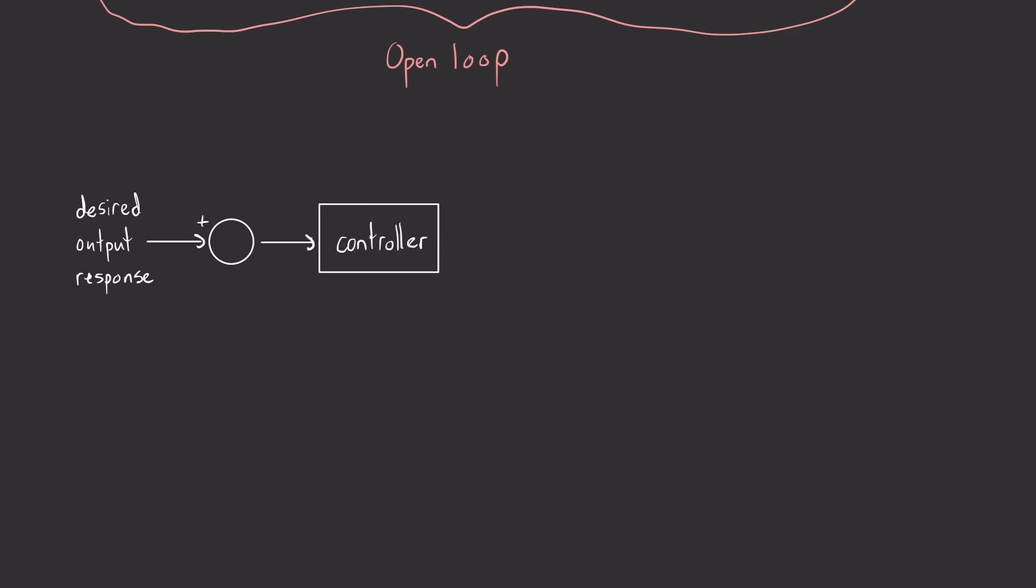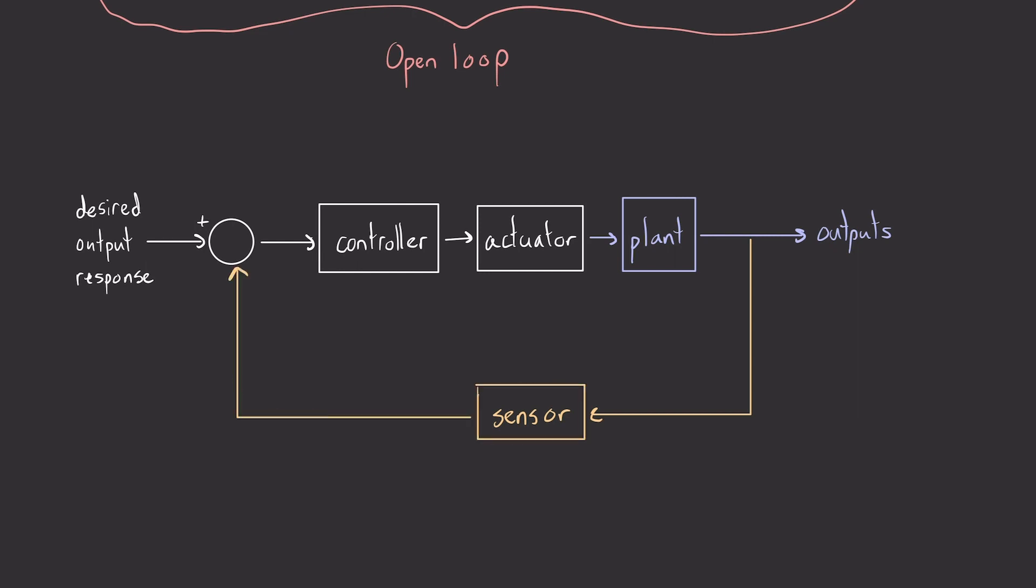The formulation is in general pretty similar, except now we're going to have a sensor that's going to feedback our output, and we're going to generate an error term, namely by subtracting the output from the input, and the controller can now handle that error term.